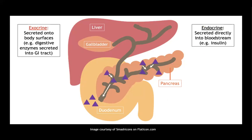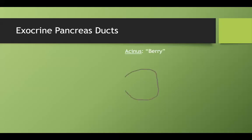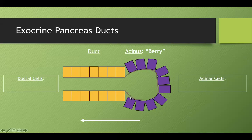For the exocrine pancreas, the pancreas is responsible for secreting pancreatic enzymes, bicarbonate, and a combination of water and electrolytes. Zooming in on the ducts: you have an acinus lined by acinar cells and a duct lined by ductal cells. Flow moves distally — acinar cells secrete pancreatic enzymes, water, and electrolytes, while ductal cells secrete bicarbonate and can modify pancreatic fluid.